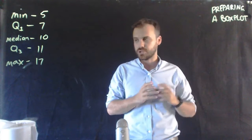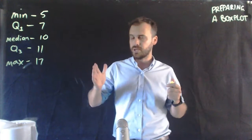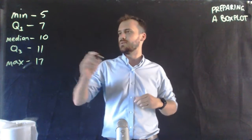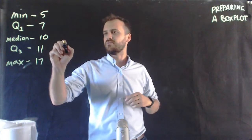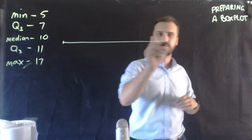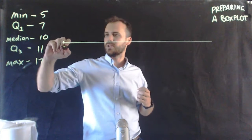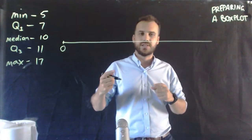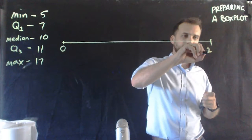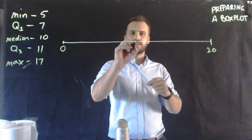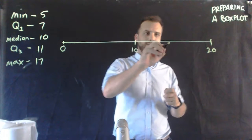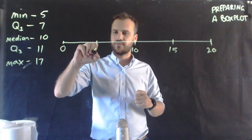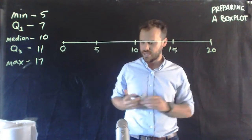Now we're going to create our box plot. When we create our box plot we just need to get the scale right. The minimum is 5, so I might just start at 0 there. The maximum is 17, so on this side I'll put this up to 20, which means the middle is going to be 10, then 15 and 5. Now I've got a nice scale there.